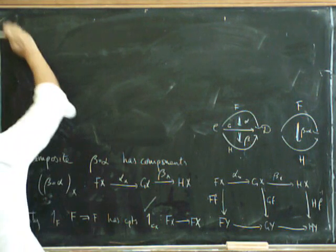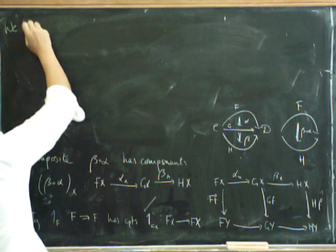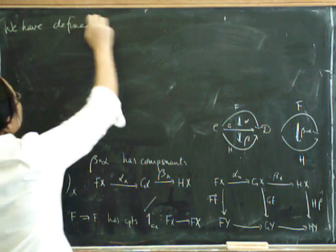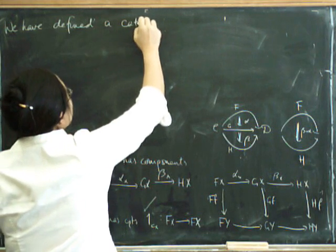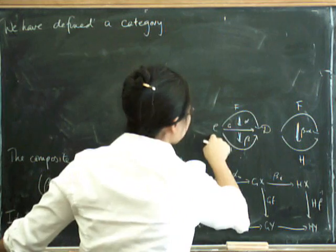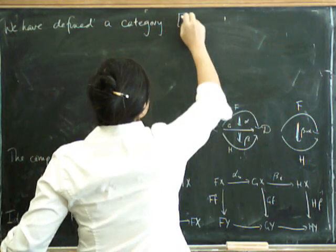This forms a category. A category of what? We have defined a whole category of things between C and D. So this is the functor category.